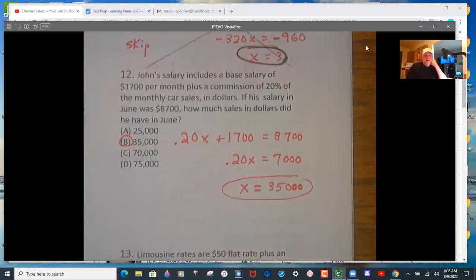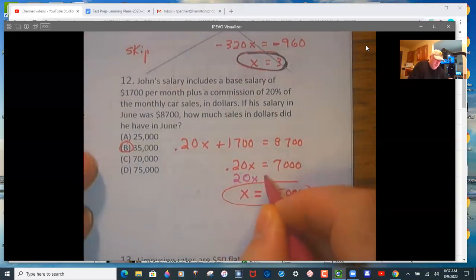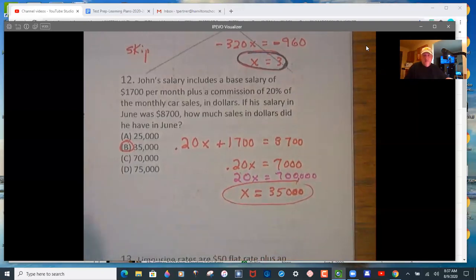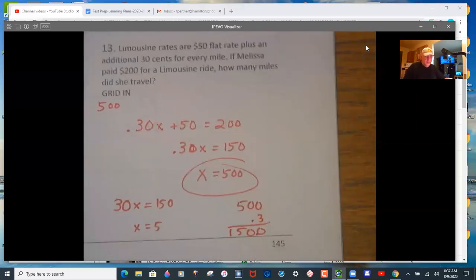Problem 12, you have a base salary, 1,700, 20% commission. You set all that up, you subtract, and 35,000 is the new amount. This is still no calculator. So make it 20x. So I'm going to put two zeros on the end here, 700,000, then divide by 20, and you get 70 over 2, 35. So think of taking a zero off the end, making it 35,000. So knowing your decimal places is everything without the calculator.